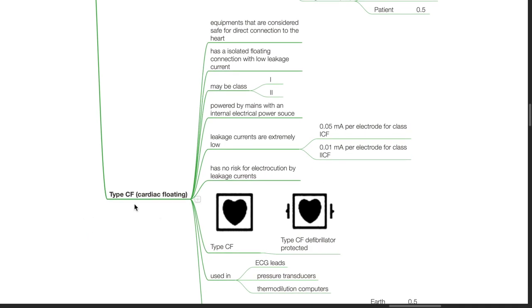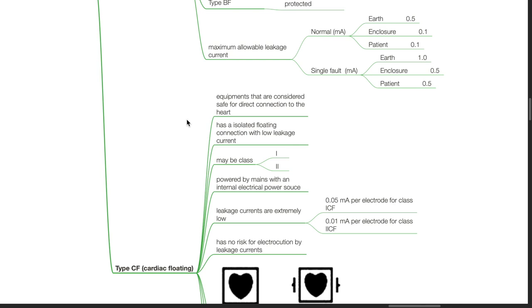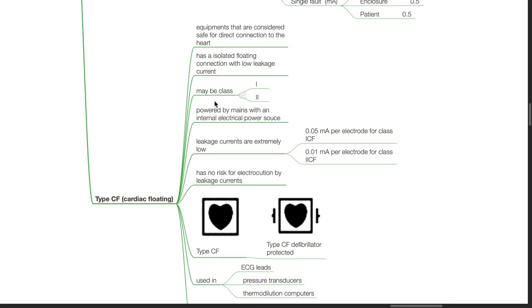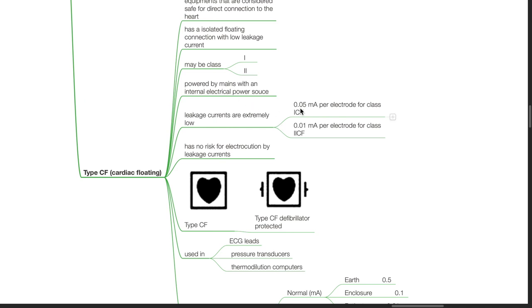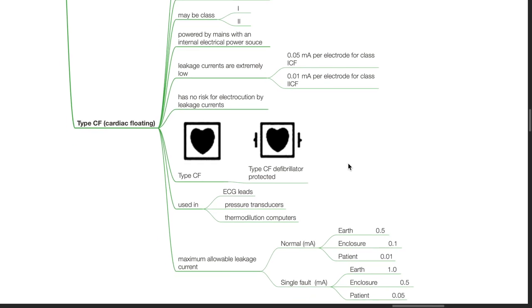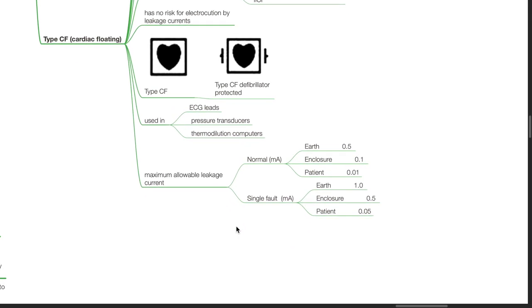Type CF or cardiac floating equipment are considered safe for direct connection to the heart. They have an isolated floating connection with low leakage current, may be either class 1 or 2, and are powered by mains with an internal electrical power source. Leakage currents are extremely low: 0.5 milliamps per electrode for class 1 CF and 0.01 milliamps per electrode for class 2 CF. There is no risk for electrocution by leakage currents. These equipments are used in ECG leads, pressure transducers, and thermodilution computers. Maximum allowable leakage current during normal conditions: Earth 0.5, enclosure 0.1, patient 0.01 milliamps. During single fault: Earth 1, enclosure 0.5, patient 0.05 milliamps.